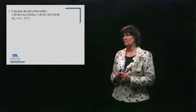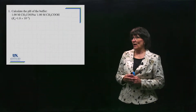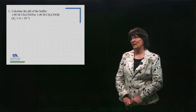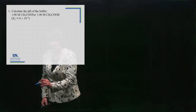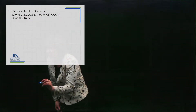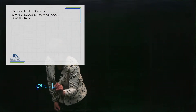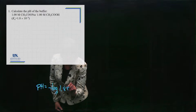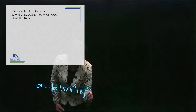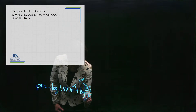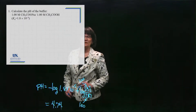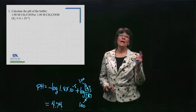The first problem is not what I described — I just have a buffer and I want to know the pH of it. So we calculate the pH of this buffer first, using pH equals pKa, which is the negative log of Ka (1.8 × 10⁻⁵), plus the log of the concentration of the base over the concentration of the acid. For both of these it's 1, so when you plug that in you get 4.74 — that's the pH of this buffer.